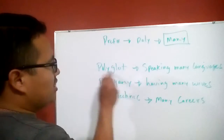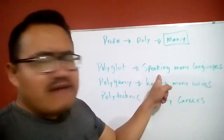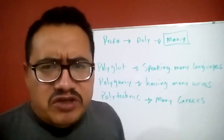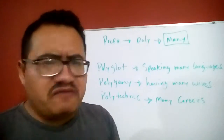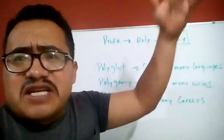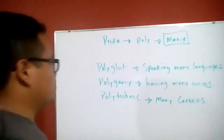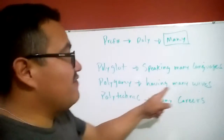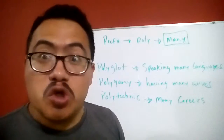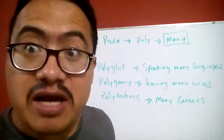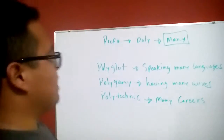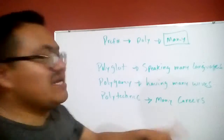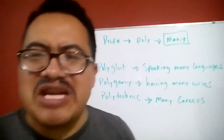We have a couple of examples. First, 'polyglot' — the definition is speaking many languages. If you speak three, four, five, six, seven languages and so forth, you are a polyglot. Next, 'polygamy' — having many wives.